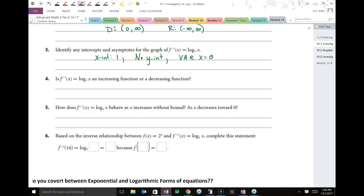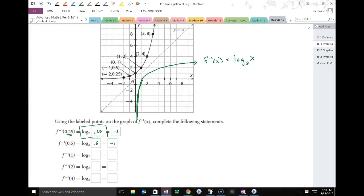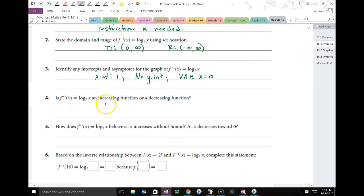For number four, where is the function increasing? Where is it going upward? What x interval? From that asymptote onward, it keeps increasing. So this function is increasing from 0 to infinity. Notice that we do not include 0 because it doesn't touch it. Does it decrease? No. No decreasing. It always increases. Which is kind of interesting because your exponential functions also only increase.